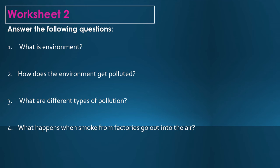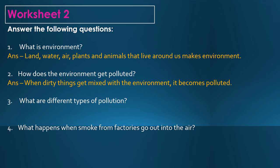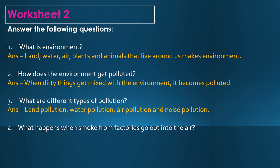Worksheet 2 — answer the following questions. First: what is environment? The answer is land, water, air, plants and animals that live around us make the environment. Second: how does the environment get polluted? The answer is when dirty things get mixed with the environment, it becomes polluted. Third: what are the different types of pollution? The answer is land pollution, water pollution, air pollution and noise pollution.